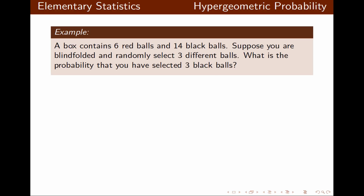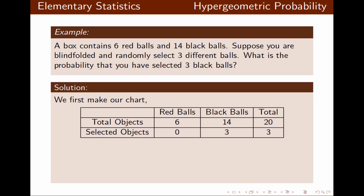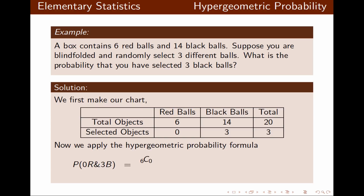Now, using the same box, what is the probability that we select three black balls? We make the chart: this time we want zero red balls but three black balls. Using the hypergeometric probability formula again: 6C0 for the red balls, 14C3 for the black balls, divided by 20C3 for the total. Once simplified, that probability is 91 over 285.